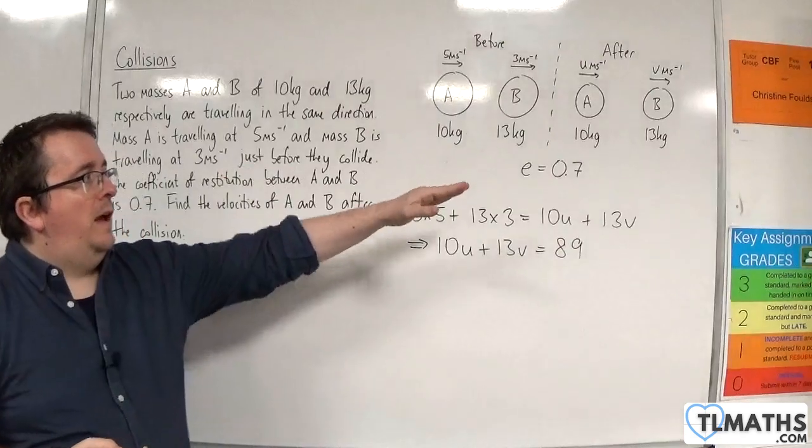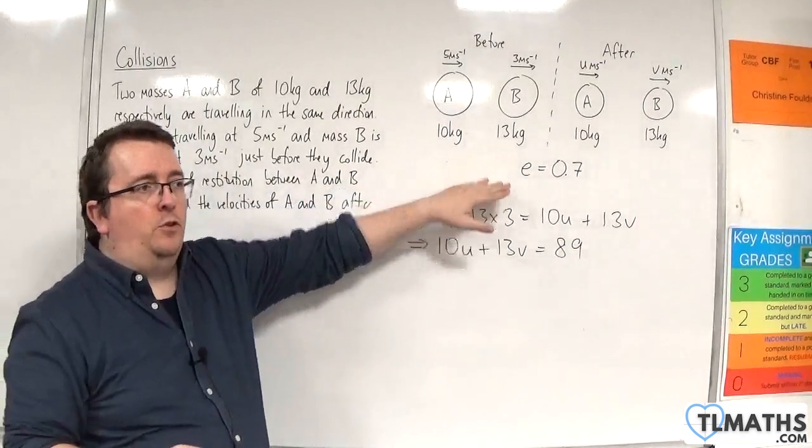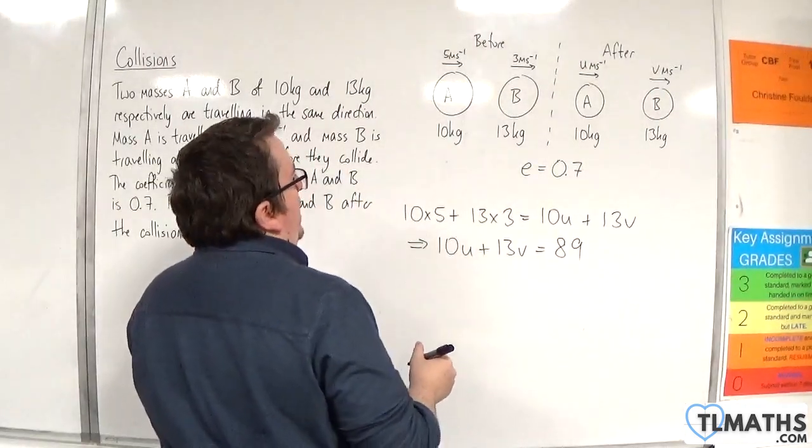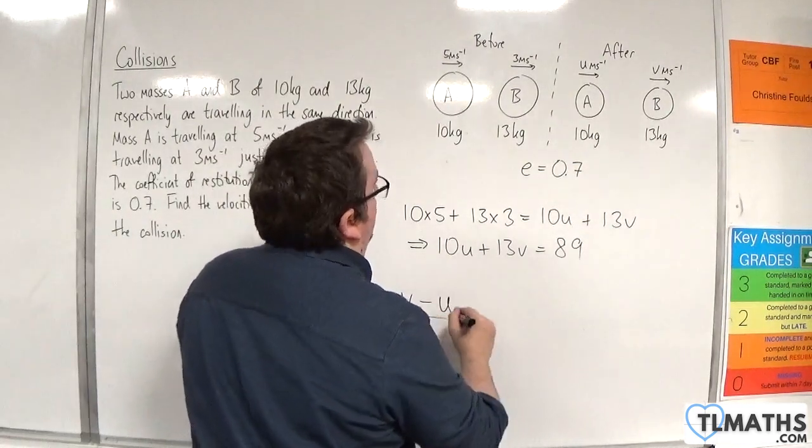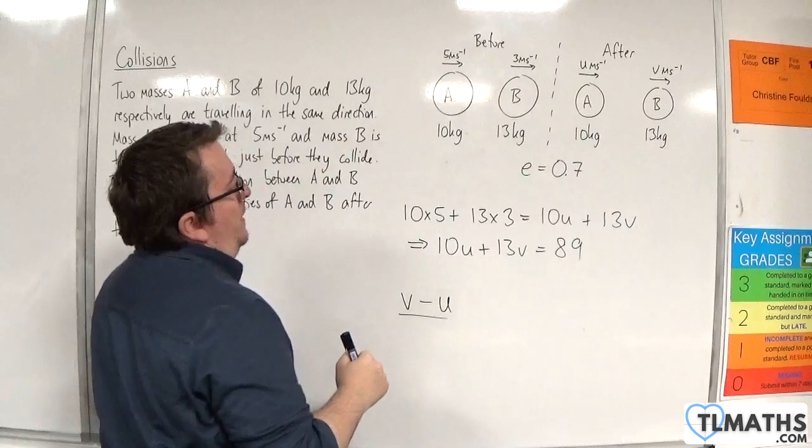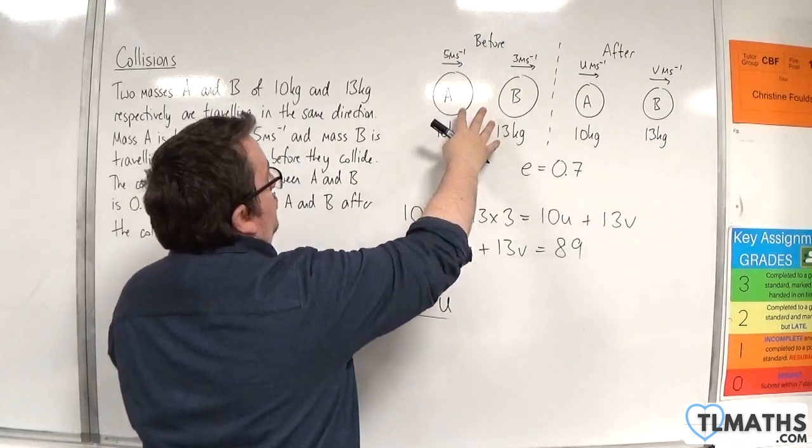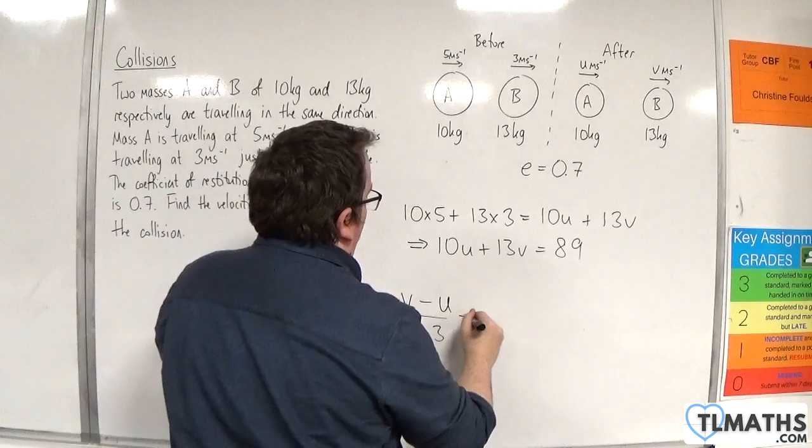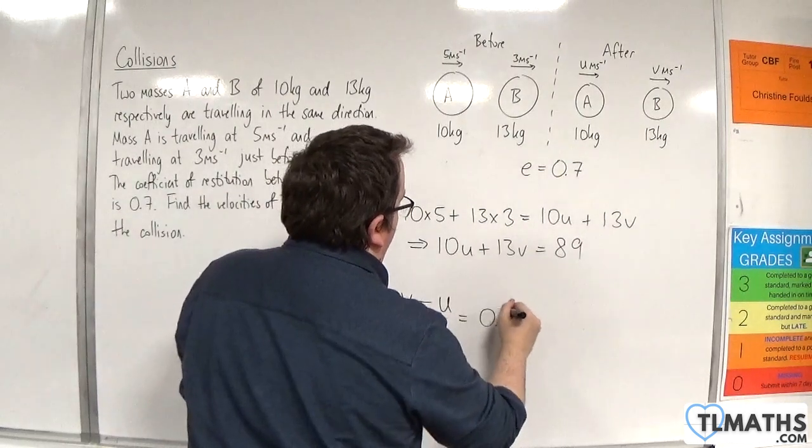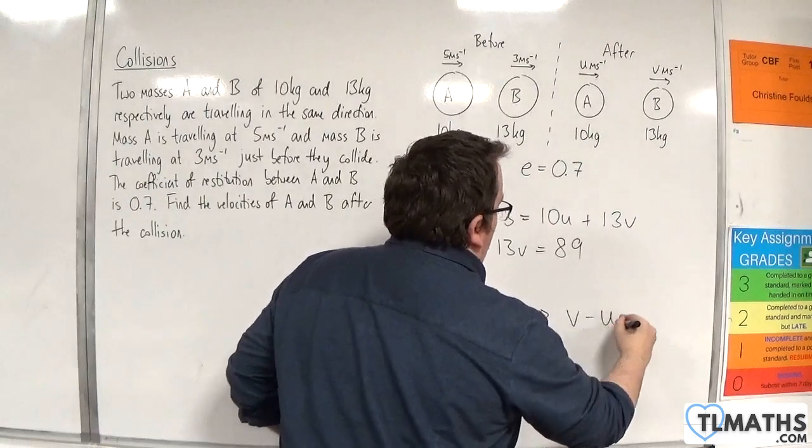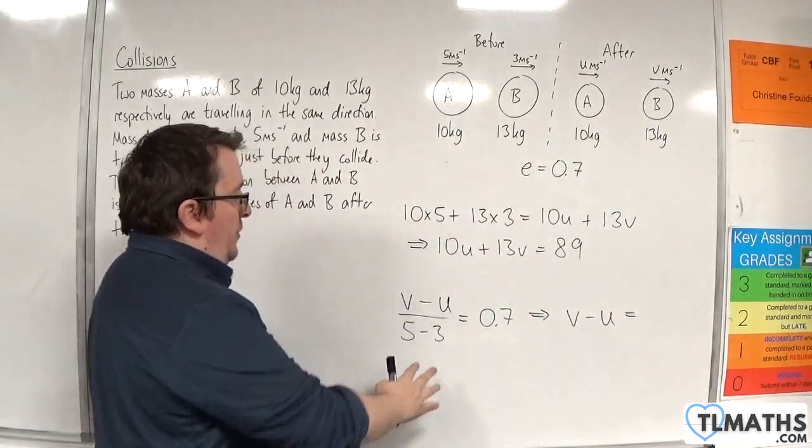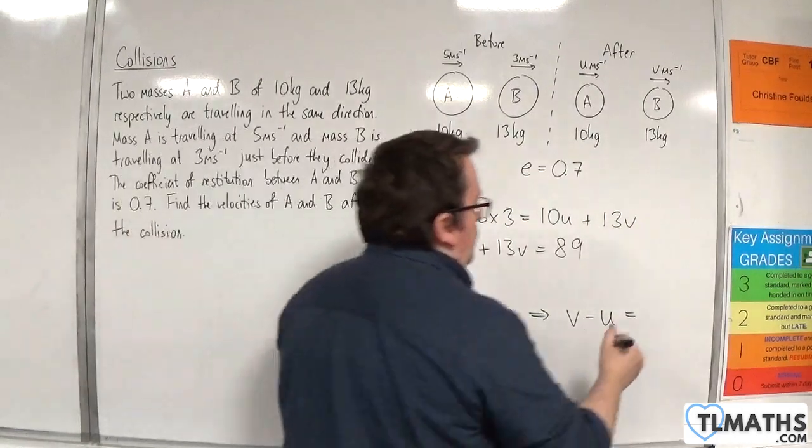We then have the coefficient of restitution is 0.7. So that will be V minus U, the speed of separation, divided by the speed of approach, which is 5 take away 3, and that's got to be equal to 0.7. So V minus U has got to be equal to 2 times 0.7, so 1.4.